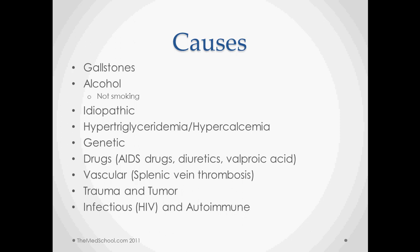Idiopathic causes represent up to 30 percent of all acute pancreatitis, so a lot of these people won't go home with a real understanding of why it happened. Hypertriglyceridemia and hypercalcemia can both lead to pancreatitis. There are several types of genetic causes of acute pancreatitis. Many different drugs can cause it — AIDS drugs, diuretics, valproic acid, and some chemotherapy drugs. There are also vascular causes, one of the big ones being splenic vein thrombosis, and any vasculitis can cause ischemia to the pancreas.